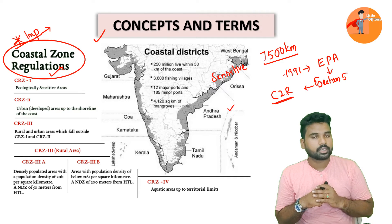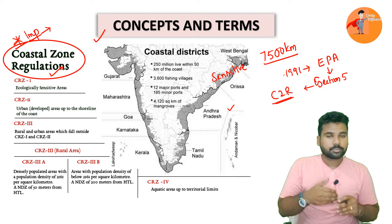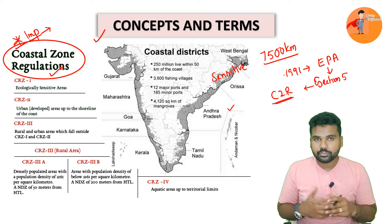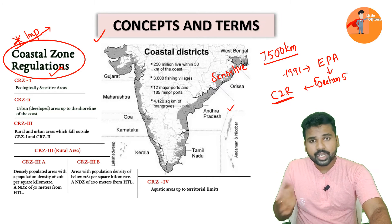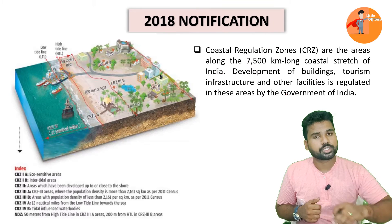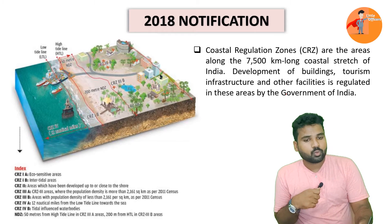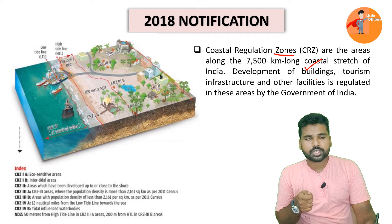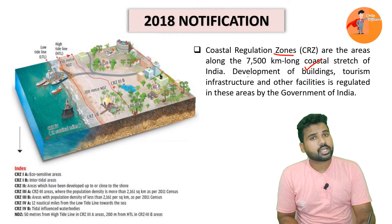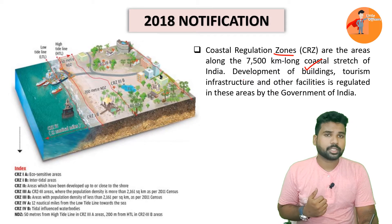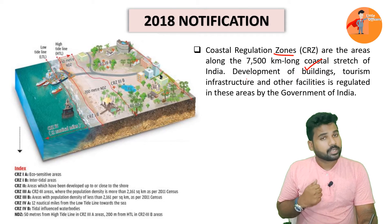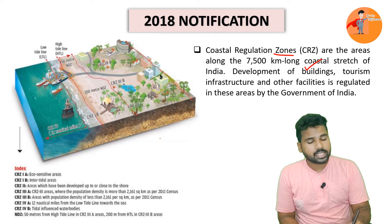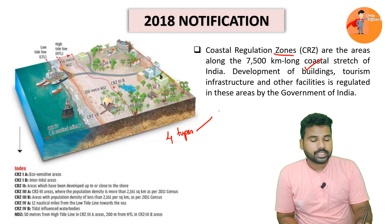Through this section, Coastal Regulation Zones (CRZ) have been regulated. First, let us see what a coastal regulation zone is — these are areas along the coastline in which development of buildings, tourism infrastructure, and other facilities are regulated by the government so that we can have sustainable development. For this purpose, the government has classified them into mainly four types.